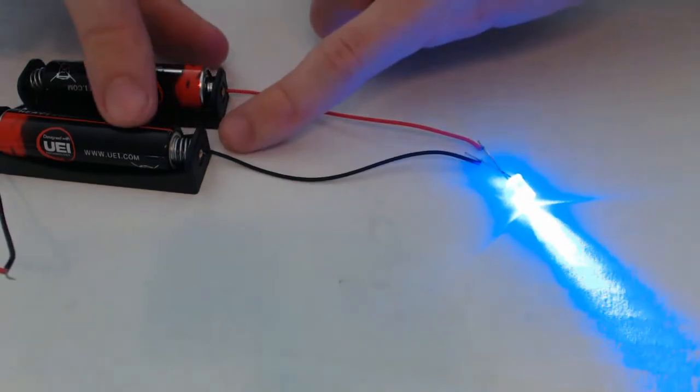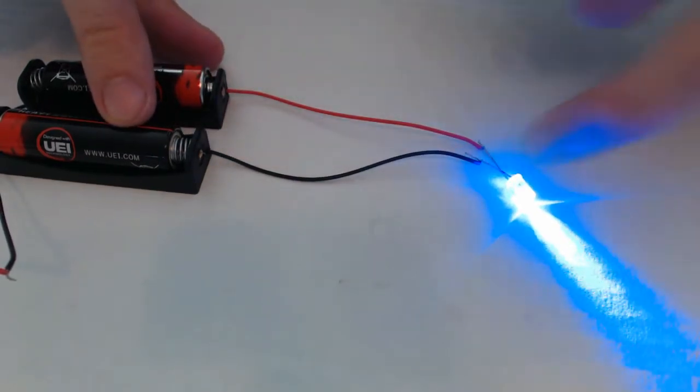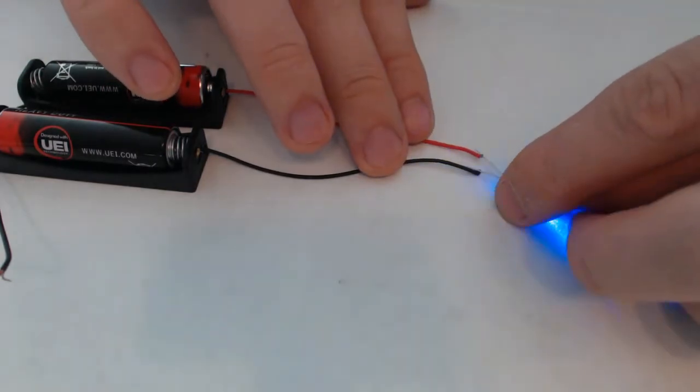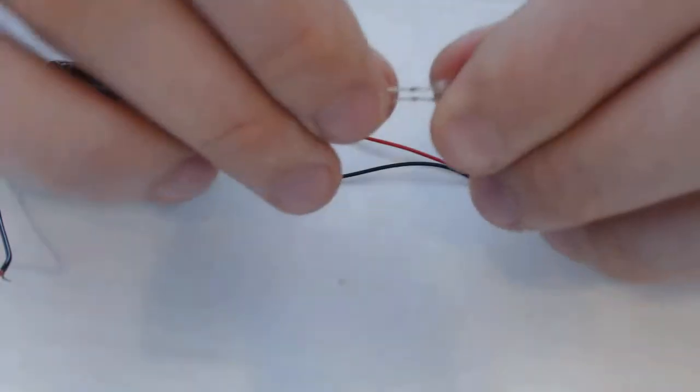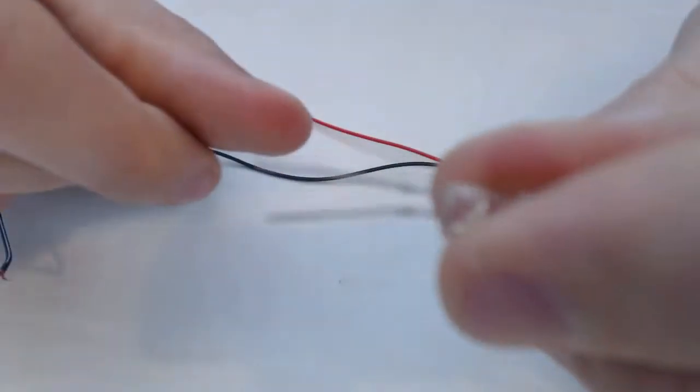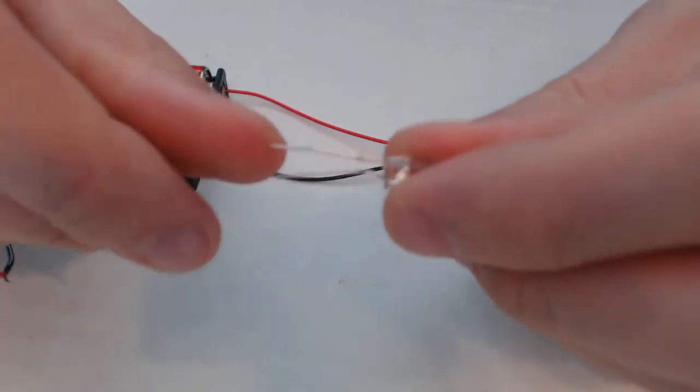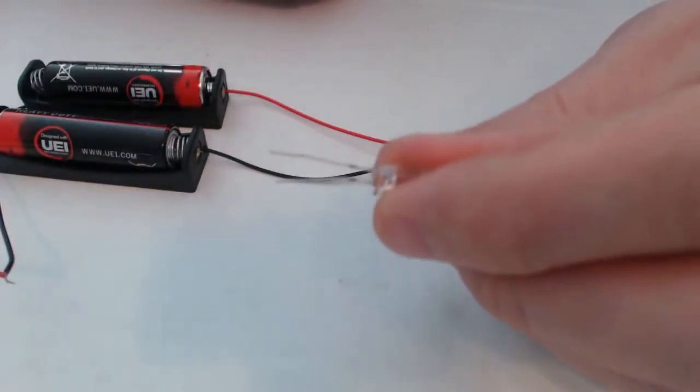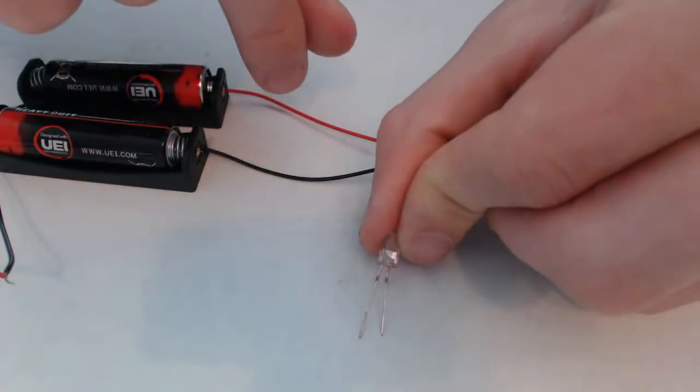You can see I have the black wire and the red wire attached to specific legs of the LED. You'll notice that on this LED I have a short leg and a long leg.